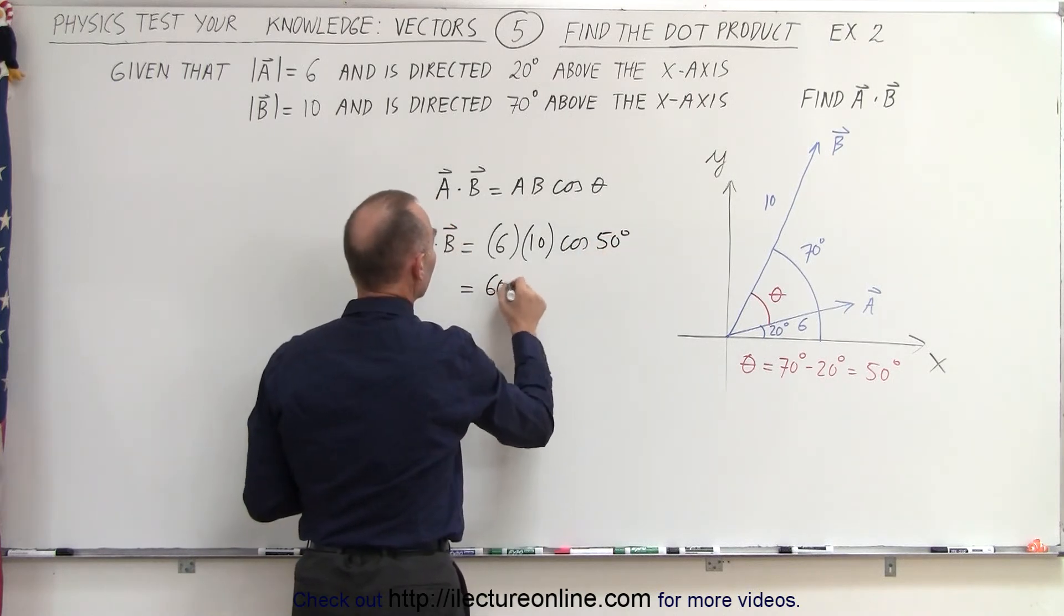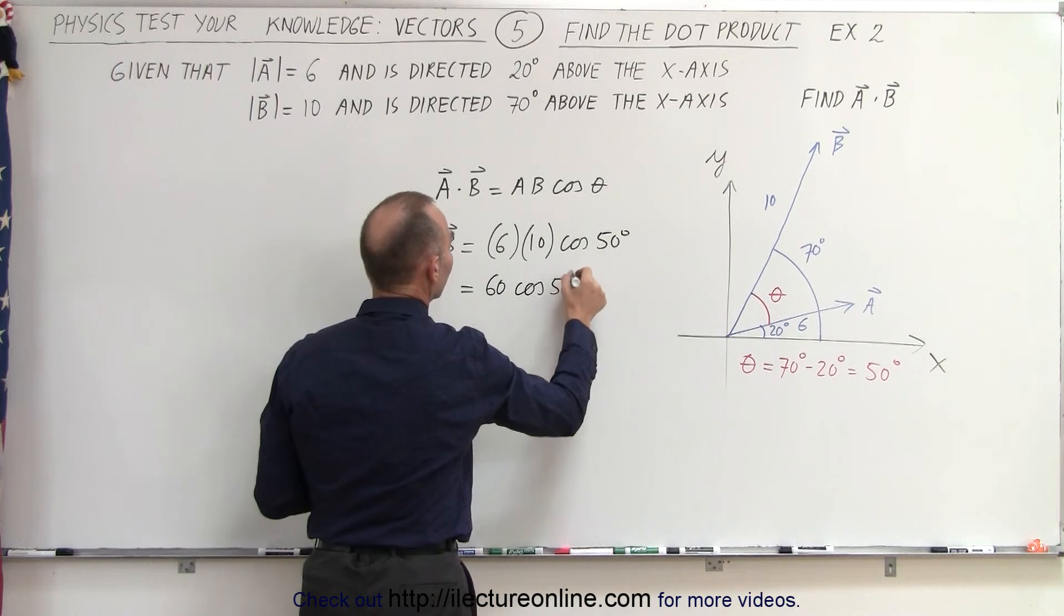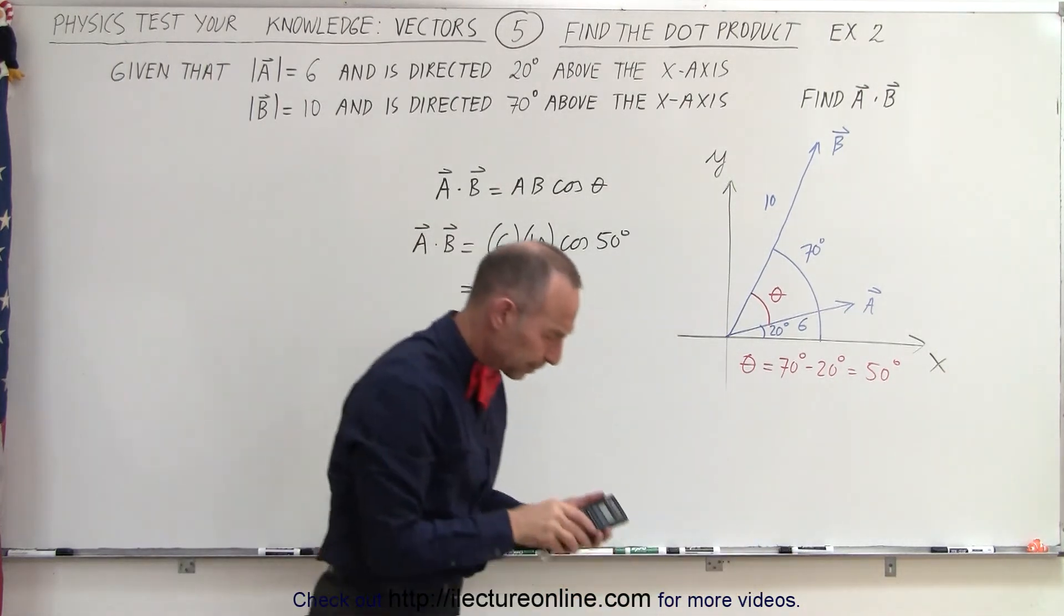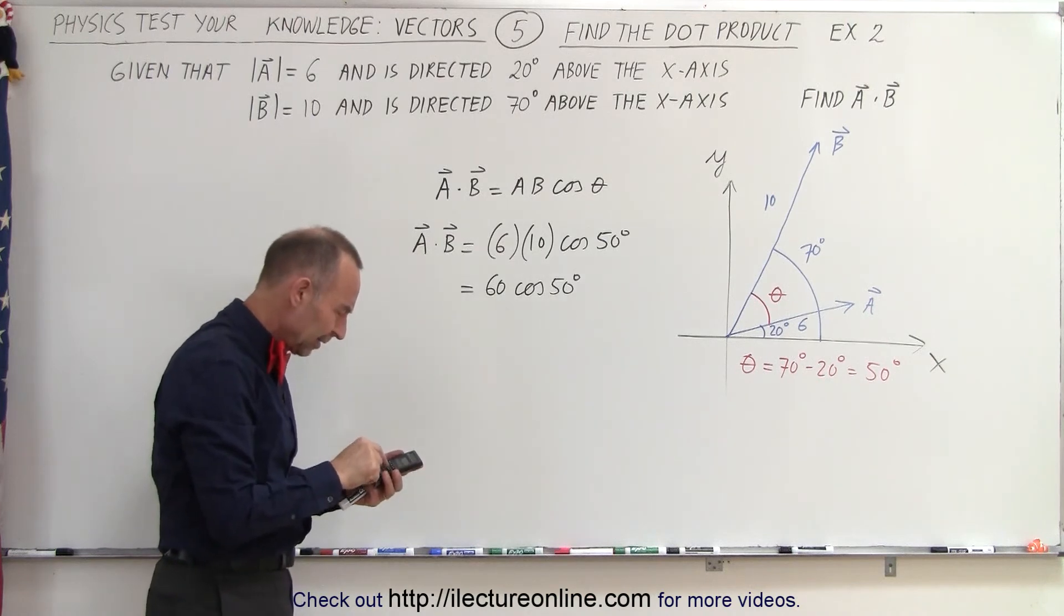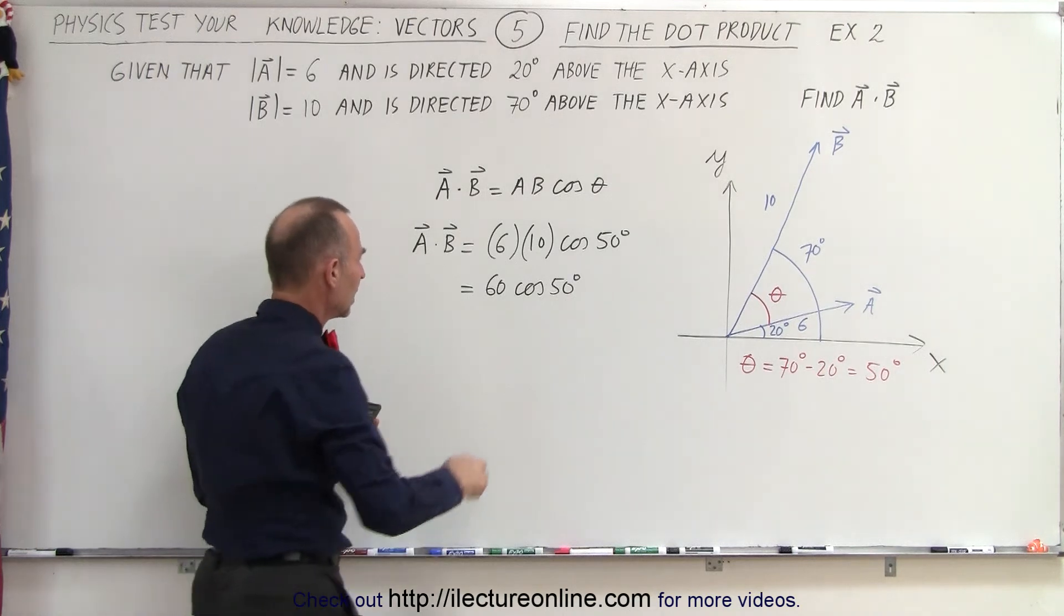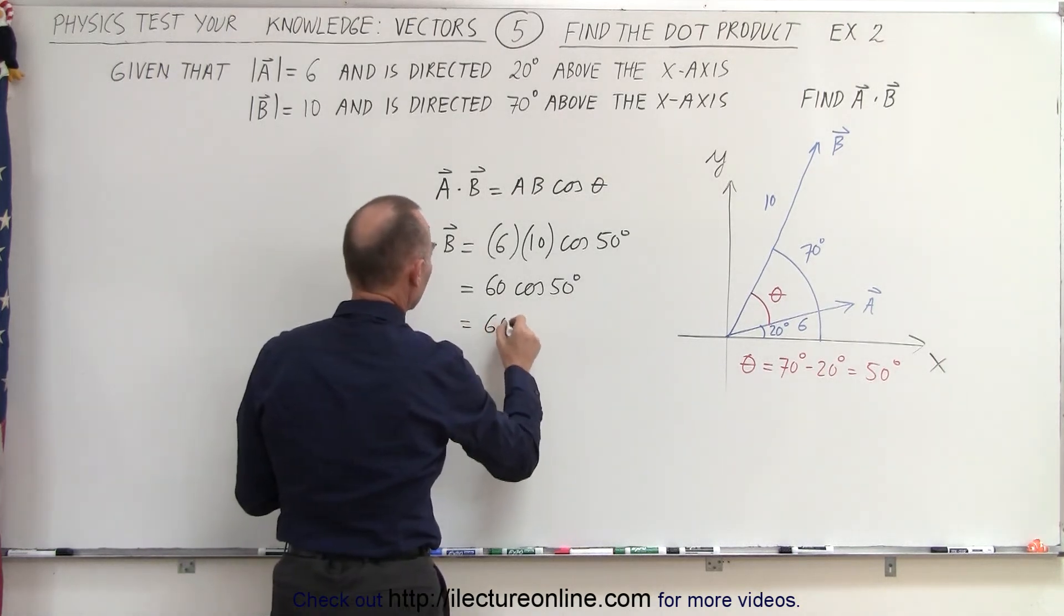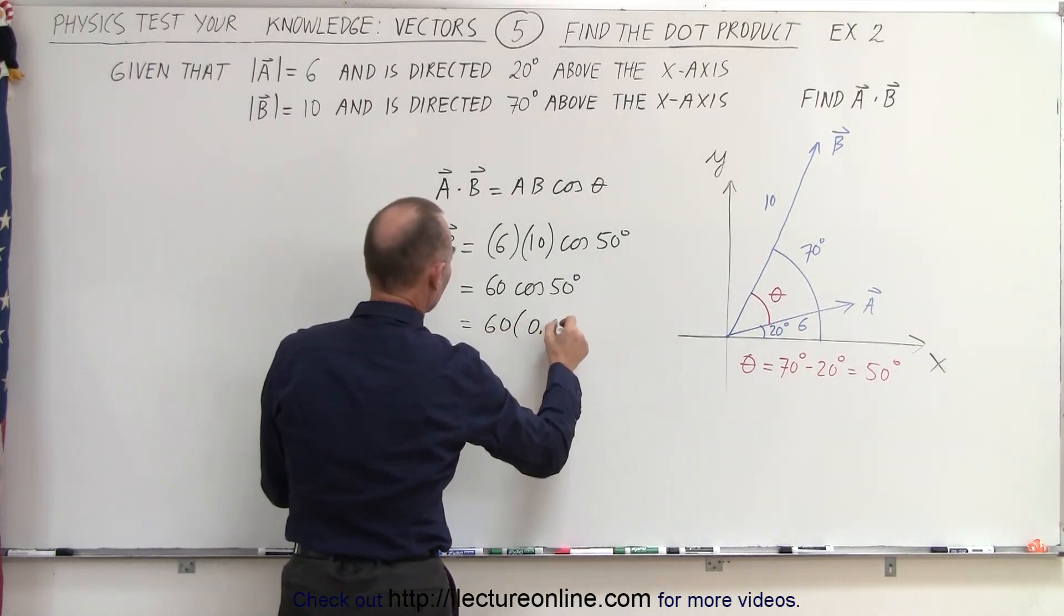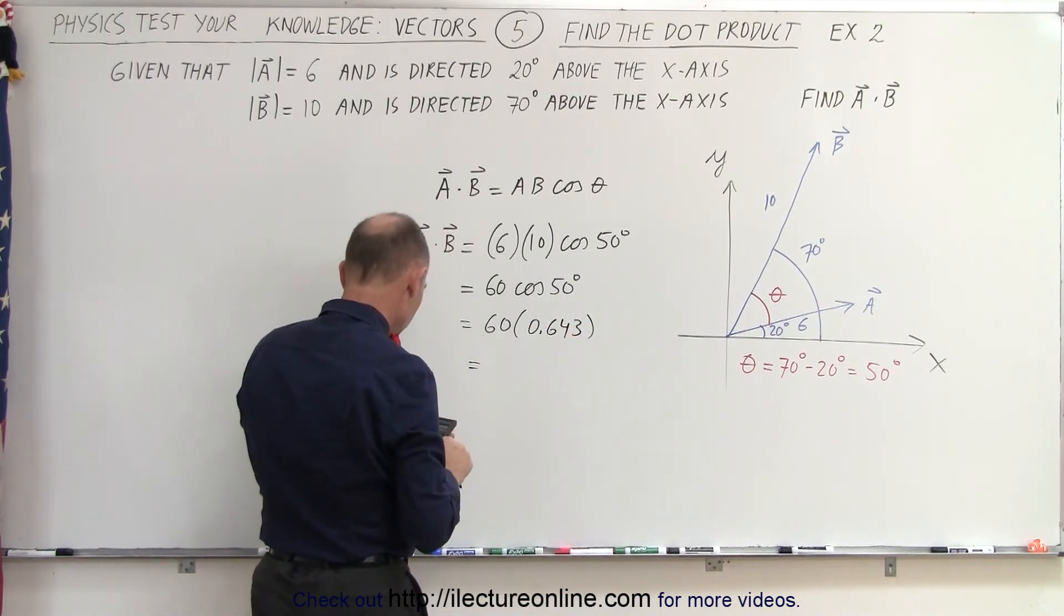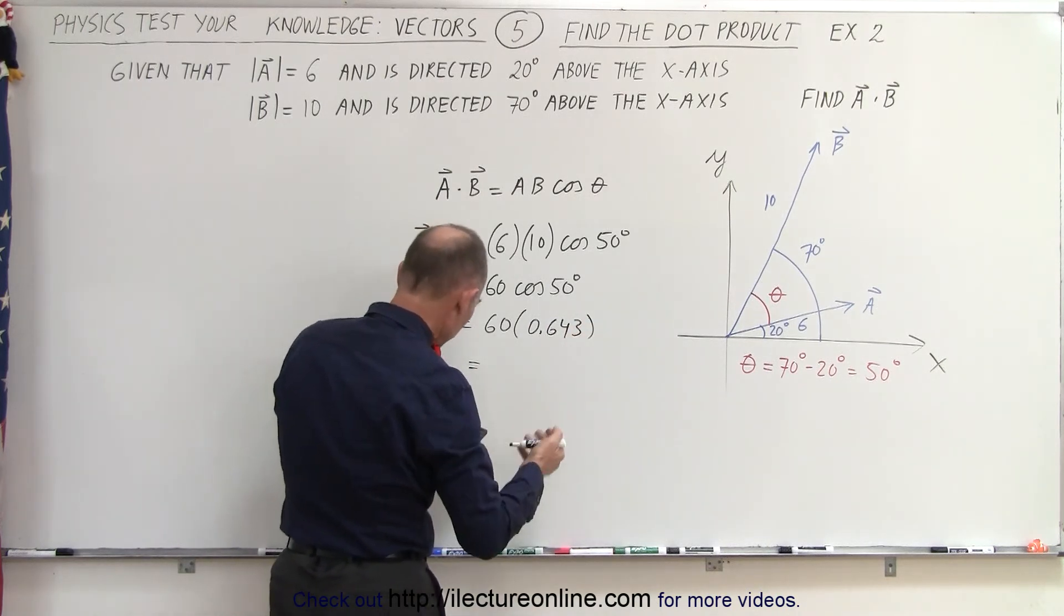Which is equal to 60 times the cosine of 50 degrees, and for that we're going to need a calculator. Take 50, the cosine of that, which is 0.643, so this would be equal to 60 times 0.643, which is equal to about 38.6.